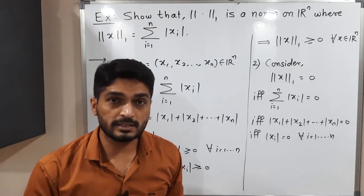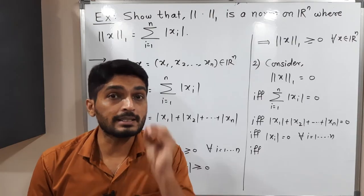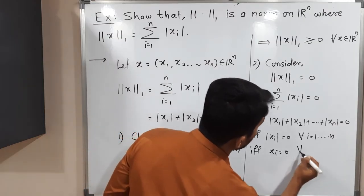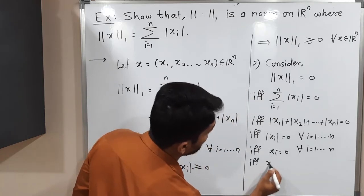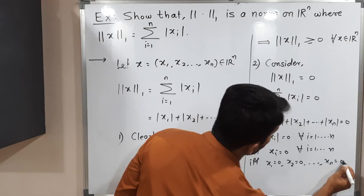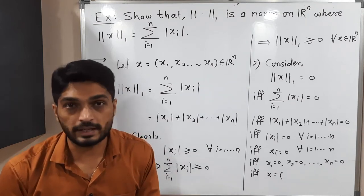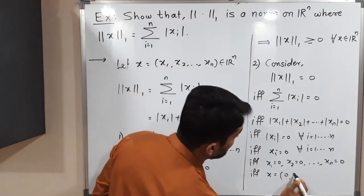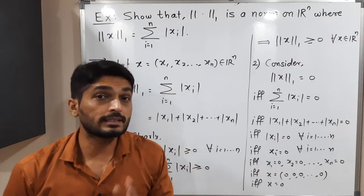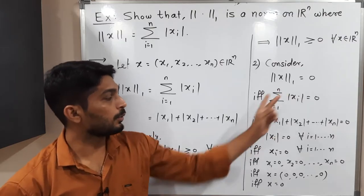Therefore |xᵢ| = 0 for all i from 1 to n, meaning |x₁| = 0, |x₂| = 0, ..., |xₙ| = 0. Since the modulus of a number is zero only when the number itself is zero, we get xᵢ = 0 for all i. That means x₁ = 0, x₂ = 0, ..., xₙ = 0, so x = (0, 0, ..., 0) = 0. Thus norm₁(x) = 0 if and only if x = 0, and the second condition is satisfied.